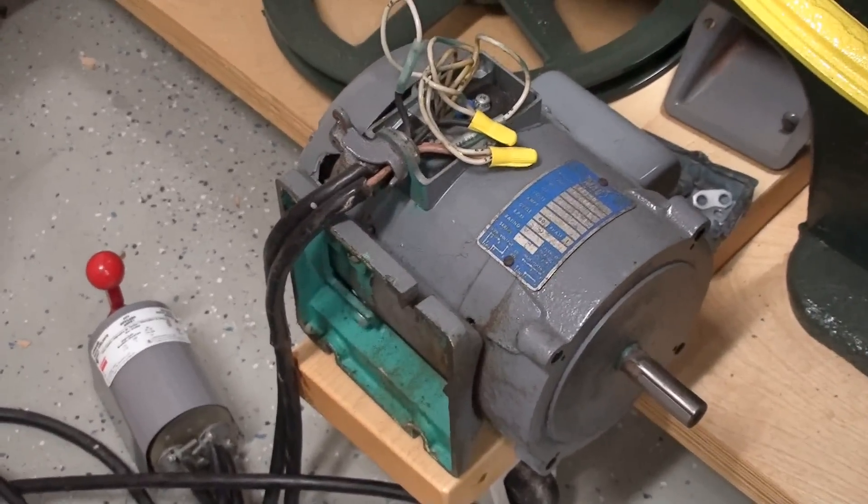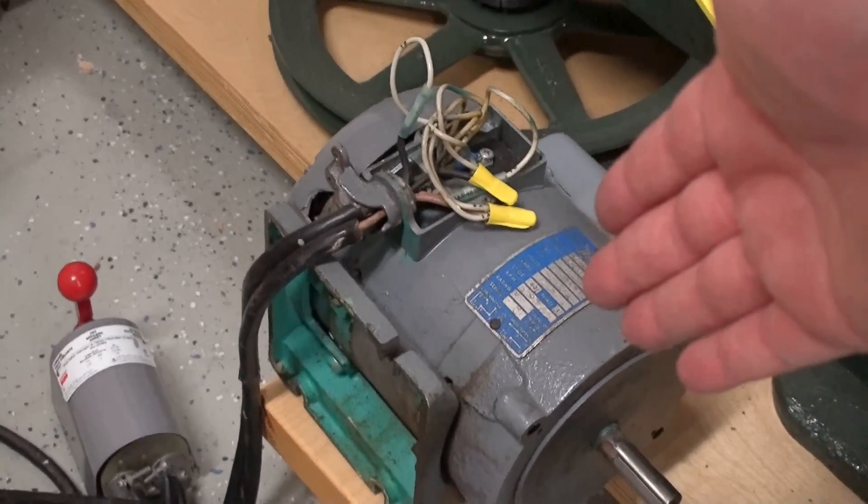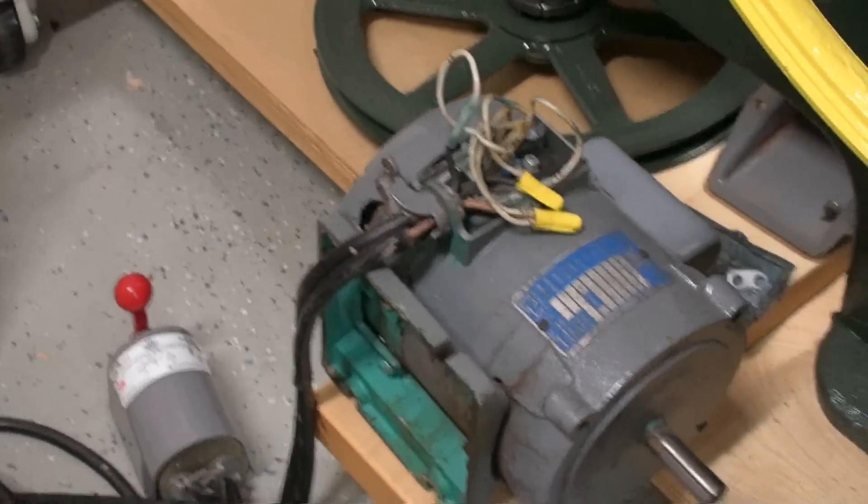This is the original motor here, or I don't know it's original, but it came with the lathe when I got it. It's got the motor here, which is a half horsepower motor and a tumbler switch for forward, reverse, and stop.